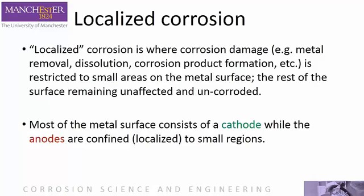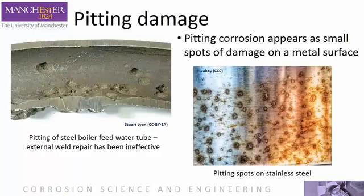Often this type of corrosion occurs on normally shiny or passive metals like aluminium or stainless steel. Here you can see two examples of pitting corrosion. On the left is a boiler tube that has suffered from internal pitting damage. The external weld repair is clearly ineffective. The image on the right shows typical spots of pitting on stainless steel. In both cases, the majority of the metal surface is uncorroded or passive.